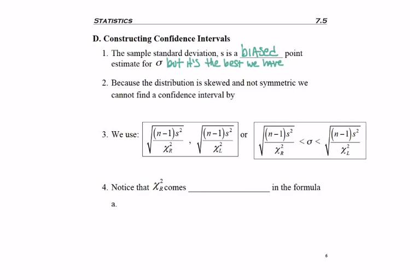We're used to an unbiased estimator, meaning that about half the time it underestimates and half the time it overestimates. Turns out with S, it overestimates like every time, but it's the closest that we have. So hopefully it's not overestimating by too much.